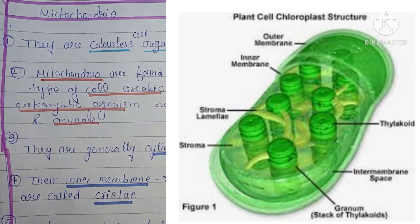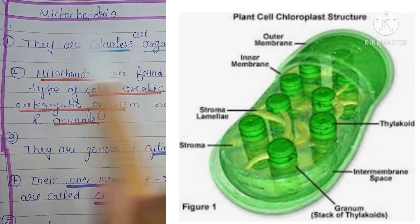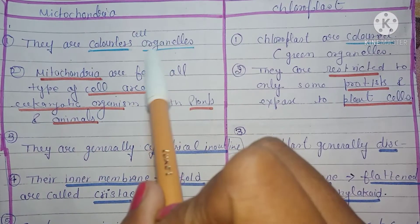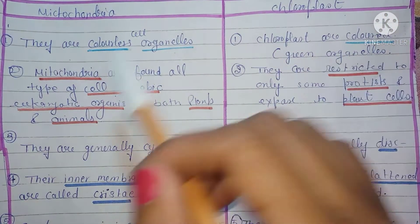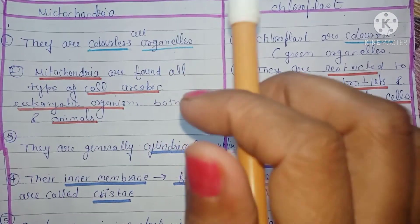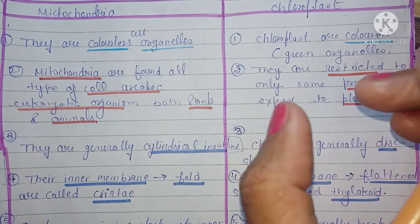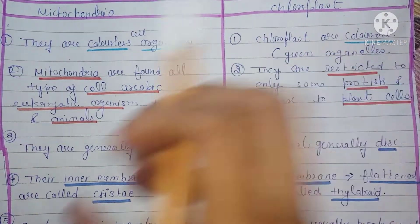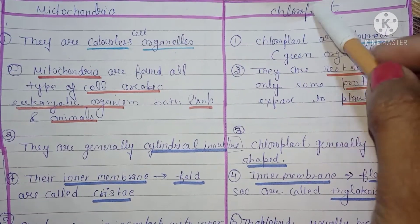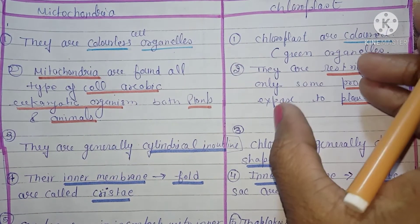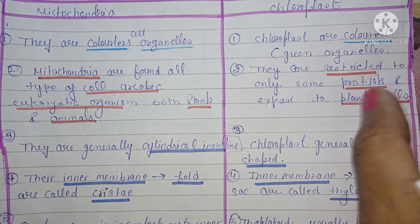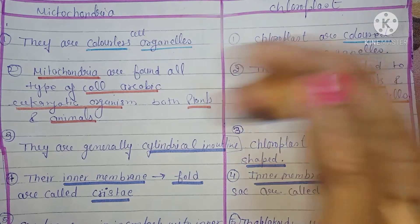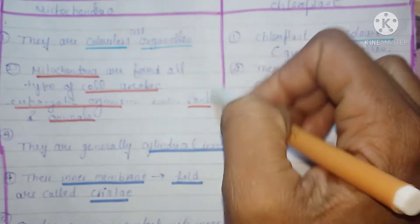Mitochondria are colorless organelles, and chloroplast are green colored organelles. Mitochondria are present in all types of eukaryotic cells — both plant and animal cells — whereas chloroplast are generally present in plant cells only.